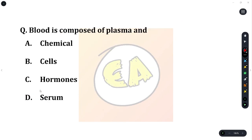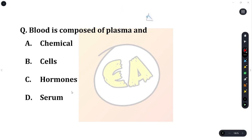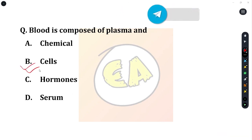Next question: blood is composed of plasma and? Option A: chemicals. Option B: cells. Option C: hormones. Option D: serum. The correct answer is cells — blood is composed of plasma and cells.